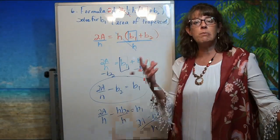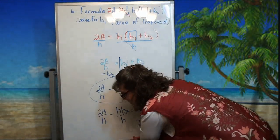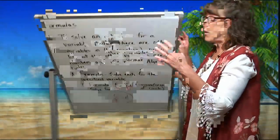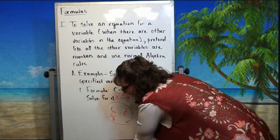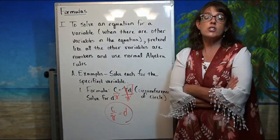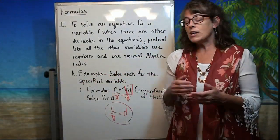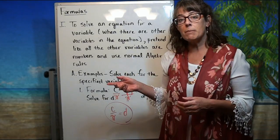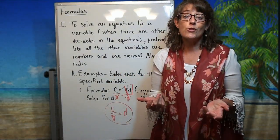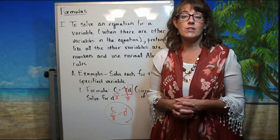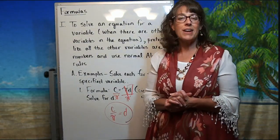I hope this helps with rearranging formulas and solving for a specified variable. Remember the whole idea: pretend all the other variables are numbers, think about what proper order of operations would do to the variable you want to isolate, then kick it in reverse and do the opposite every single time, in reverse order. Have a great day!